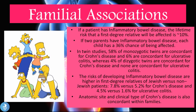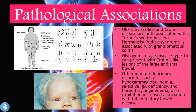4% of dizygotic twins are concordant for Crohn's disease and none are concordant for ulcerative colitis. The risks of developing IBD are higher in first-degree relatives of Jewish versus non-Jewish patients: 7.8 versus 5.2 for Crohn's disease and 4.5 versus 1.6 for ulcerative colitis. The anatomical site and clinical type of Crohn's disease is also concordant within families. Pathological associations include Turner's syndrome and Hermansky-Pudlak syndrome, which is associated with granulomatous colitis. Glycogen storage disease type 1AB can present with Crohn's-like lesions, and immunodeficiency disorders such as hypogammaglobulinemia, selective IgA deficiency, and hereditary angioedema also exhibit increased association with IBD.